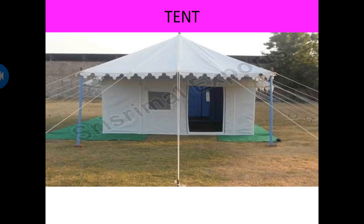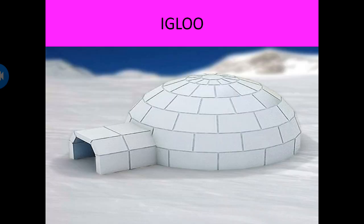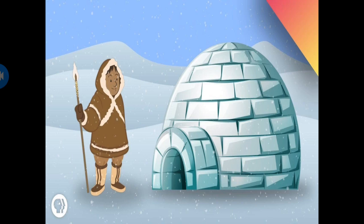This is a tent. A tent is also one type of house. It is made up of thick cloth, and that cloth is known as canvas. This is a temporary house. Igloo — igloo is made up of blocks of ice, and Eskimos live in igloo. We cannot build igloo where we live; it is made up of ice, so we can find igloo in an ice land. You will learn more about igloo and those places in your higher standard.